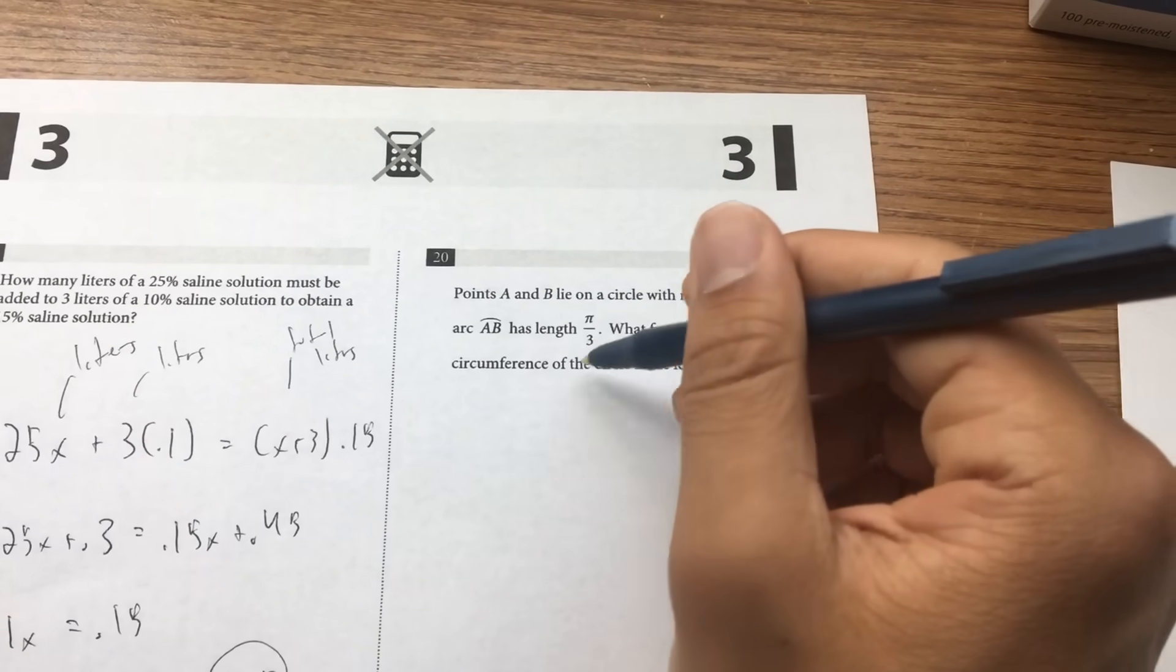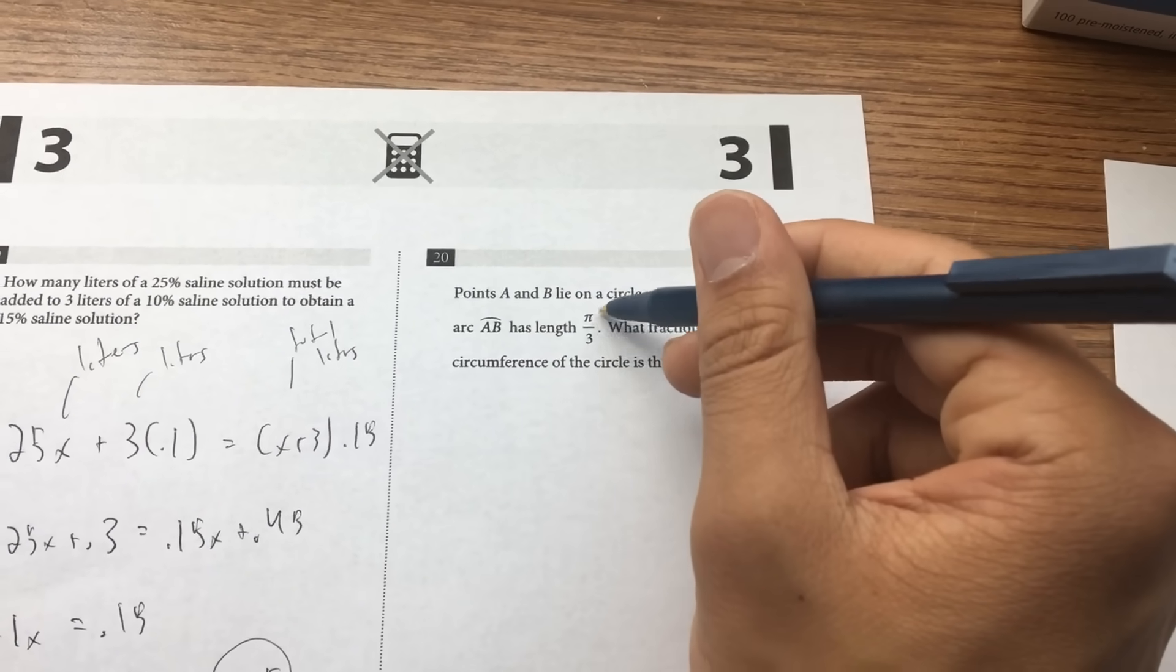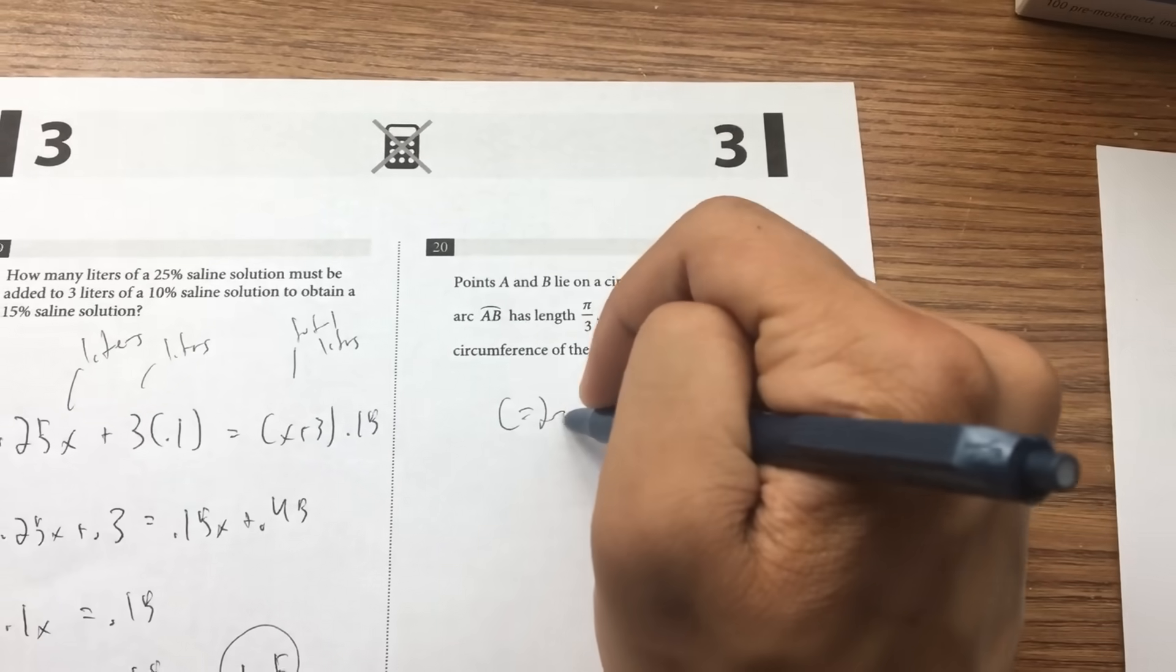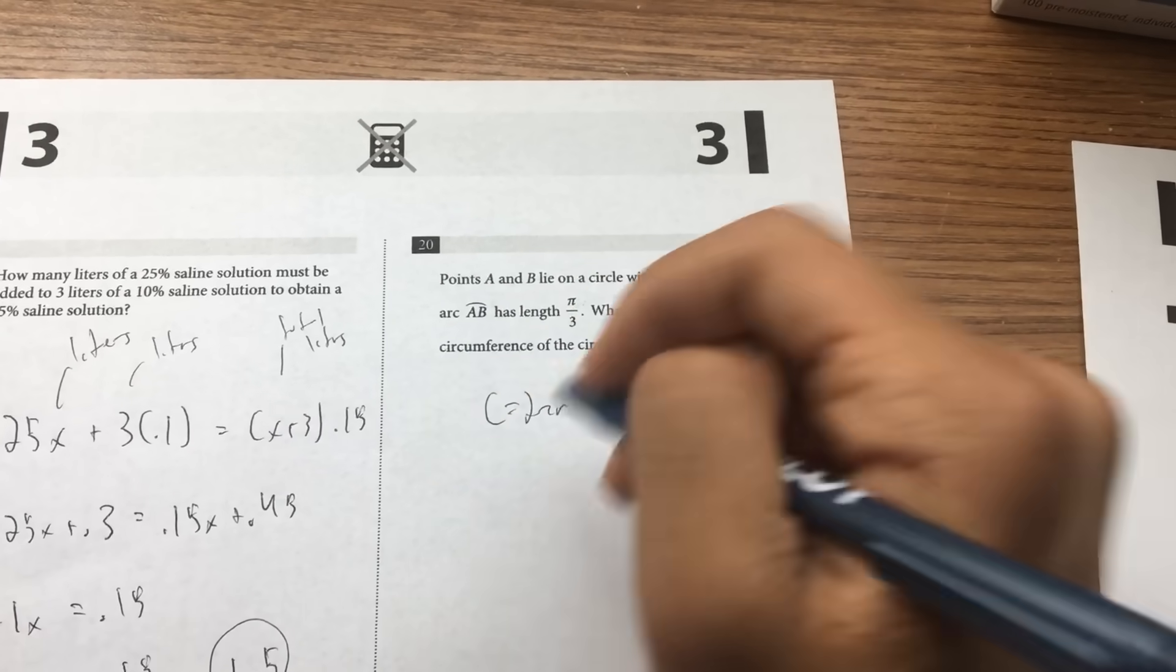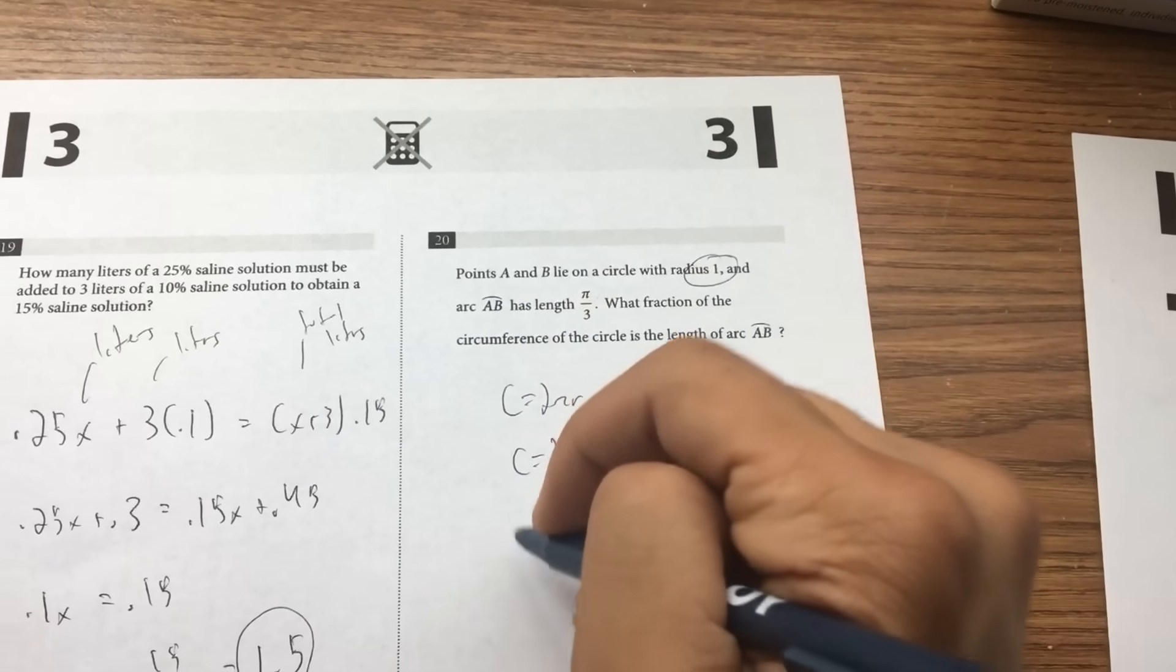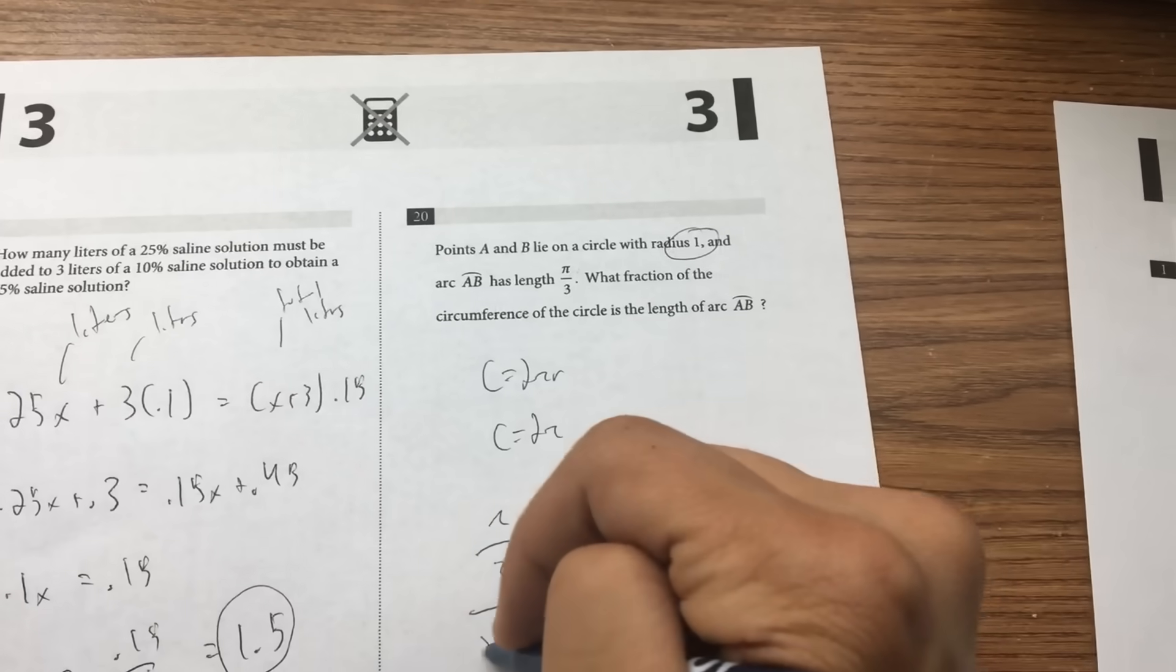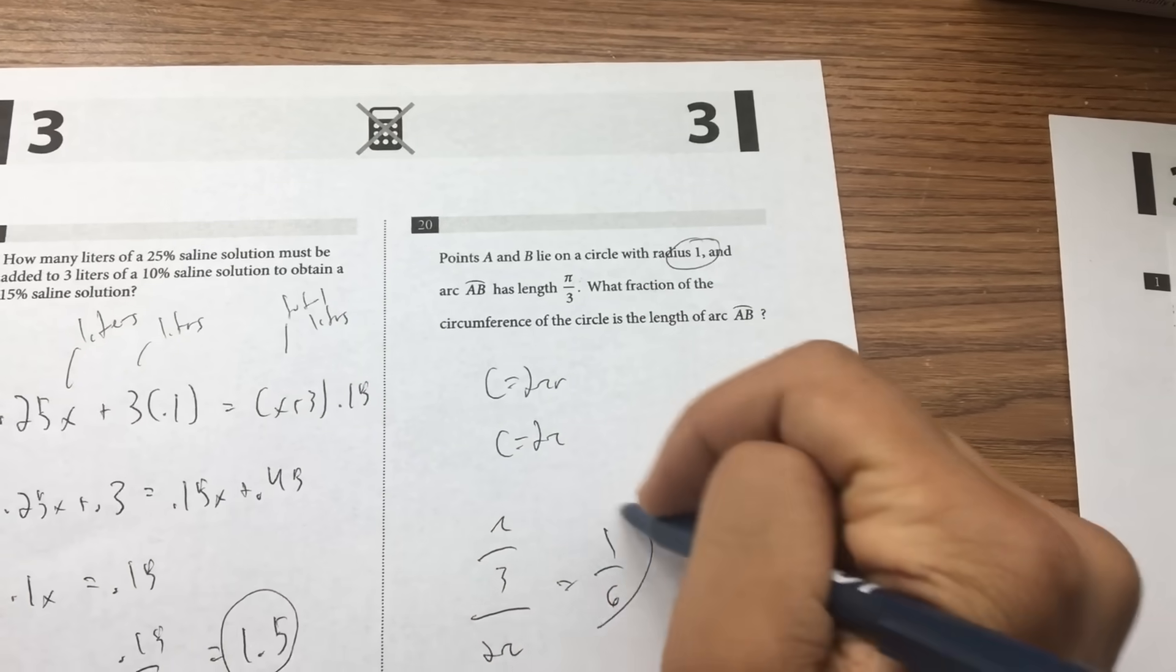Try to find the ratio between the arc length to circumference. Circumference equals 2πr. In this case, radius equals 1, c equals 2π. Let's find the ratio, π over 2π. 3 over 2π is equal to 1 over 6. That's the answer.